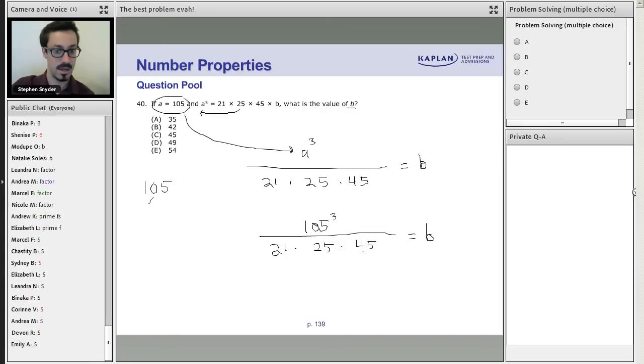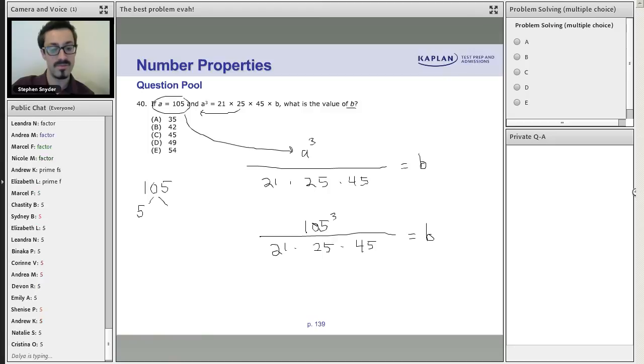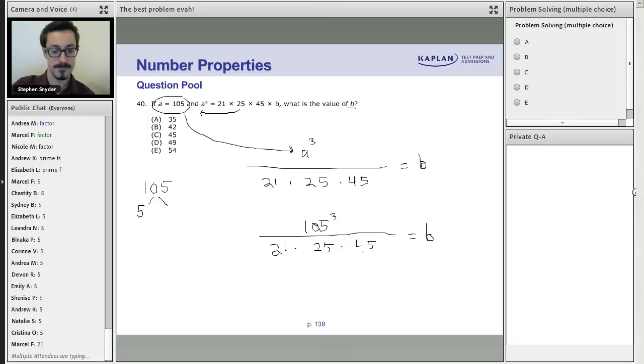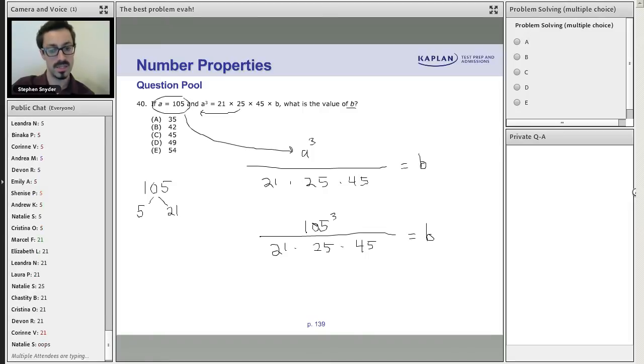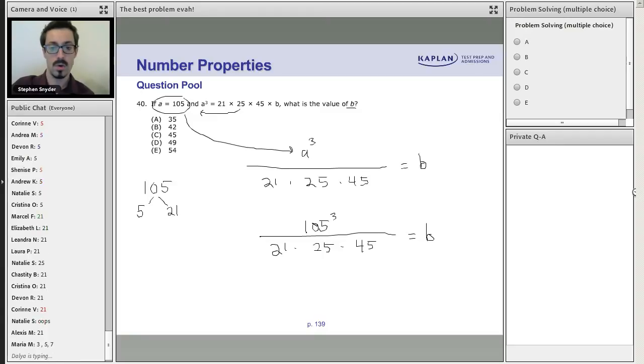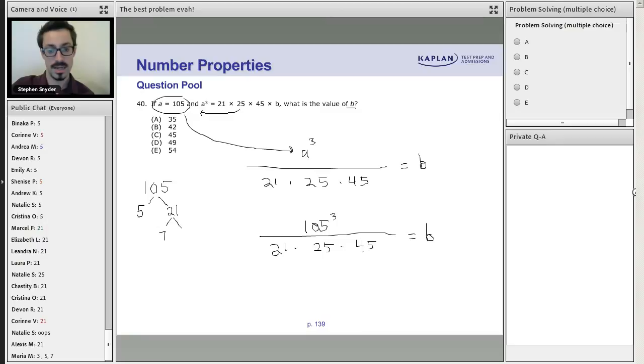Tell me, what do you know definitely goes into 105 right away? What do you see immediately can go into that number? Five, right. So let's go ahead and do that. 105 divided by 5 is going to be what? Yeah, it's actually pretty straightforward because 5 goes into 10 twice and 5 goes into itself once, so that would be 21.